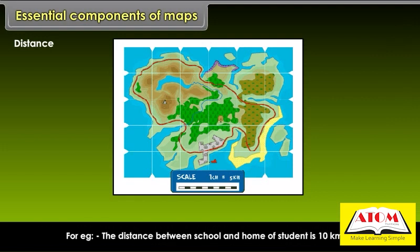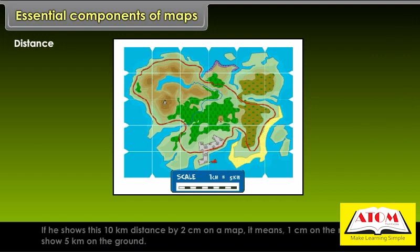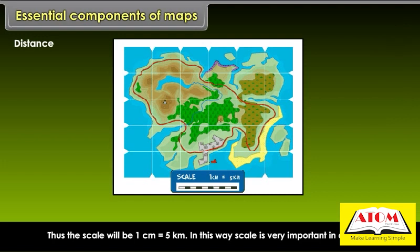For example, the distance between school and home of a student is 10 km. If he shows this 10 km distance by 2 cm on a map, it means 1 cm on the map will show 5 km on the ground. Thus, the scale will be 1 cm equals 5 km. In this way, scale is very important in a map.